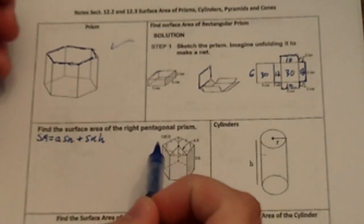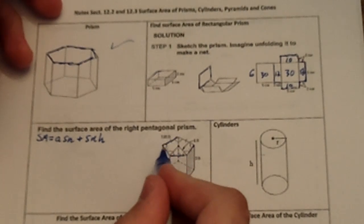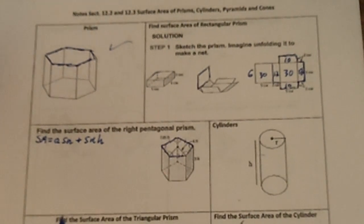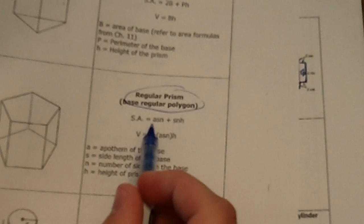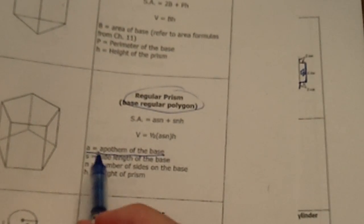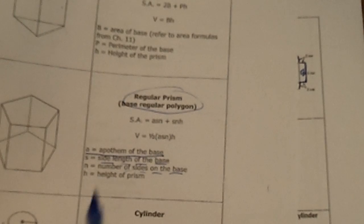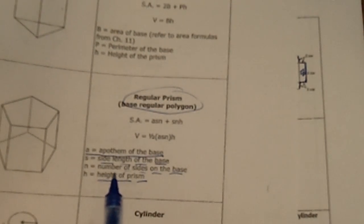Let's find the surface area of a right pentagonal prism, which means I've got pentagons as my bases. This little 'a' is the apothem of the base — remember the apothem from chapter 11. S is the side length of the base, N is the number of sides, and H is the height of the prism. Height is how tall it is, so H right here would be the height of the prism.